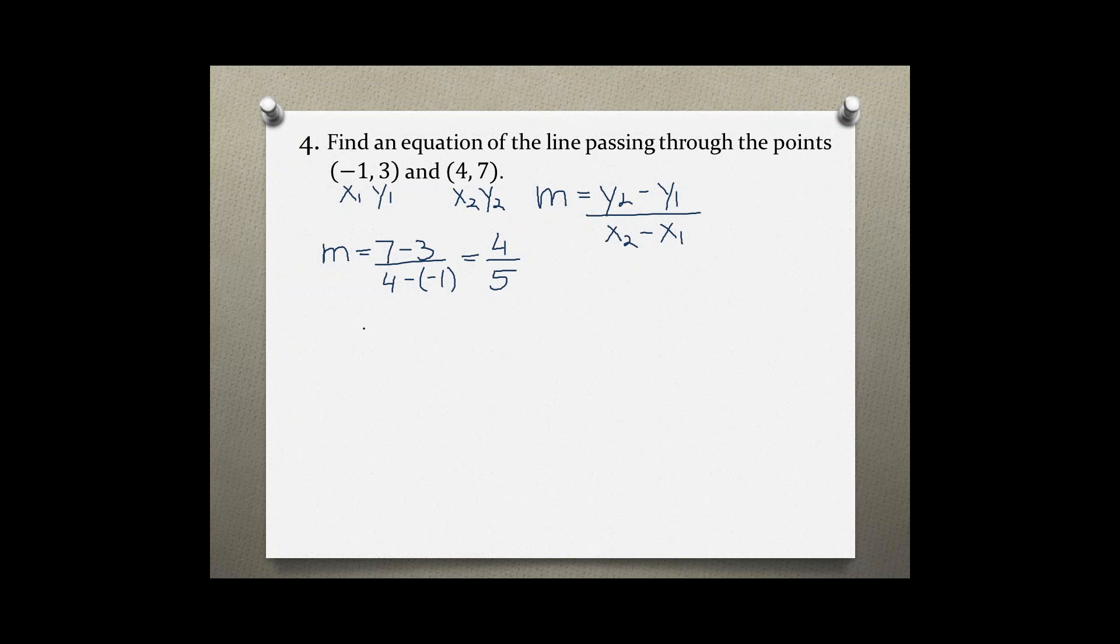Now because I found the slope and I can choose either one of these points, I can use the point slope form of an equation, y minus y1 equals m times x minus x1. Plugging in my values, I'm going to choose my second point because it's more difficult to deal with negative signs. So I'm just going to use this point as x1 and y1.